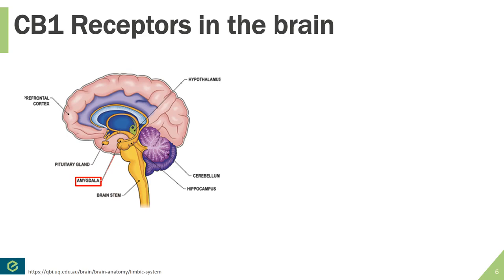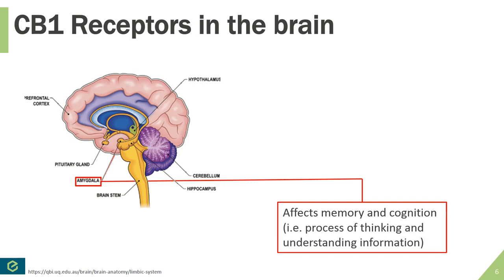Lastly, we're going to talk about the amygdala, also in the lower middle portion of the brain right next to the hippocampus. The amygdala has some effects on memory but a lot of effects on cognition — your ability to process, think, and understand information entering your brain. When the endocannabinoid system is activated, these processes are slowed or delayed. This is where a key difference between THC and CBD lies: you don't tend to see this delay in thought processing with CBD at normal therapeutic dosages, but at much higher doses you can start seeing these effects.